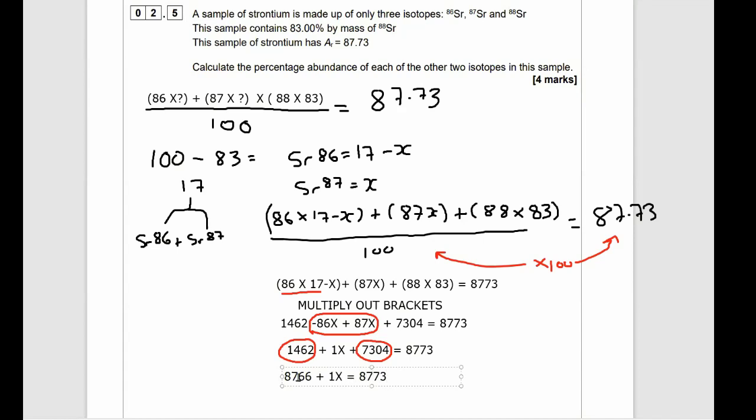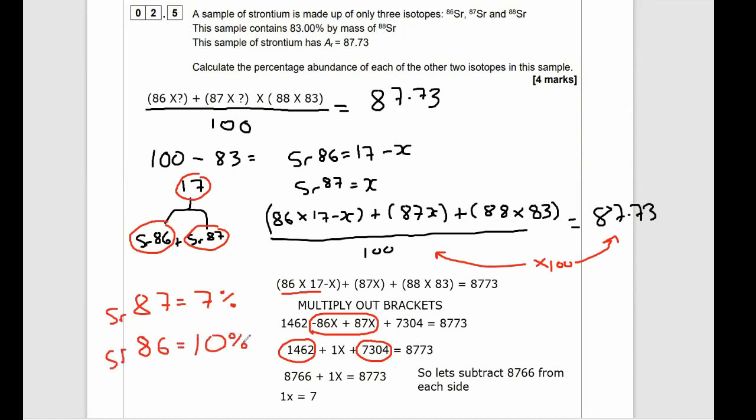Now I just need to subtract 8,766 because it's the smaller number from both sides of the equals. And what we're going to be left with is our answer for X. So 1X is going to be equal to 8,773 minus 8,766. And the answer is 7. So this means that X is 7. So Strontium 87 has an abundance of 7%. And as we know that SR86 and SR87 both equal 17, 17 minus 7 means SR86 is 10%. And there's your answers.